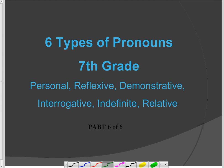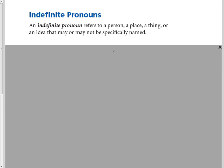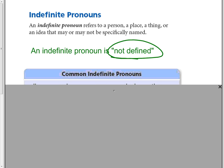This is six types of pronouns for 7th grade. This is the last type — indefinite pronoun, which is part 6 of 6. An indefinite pronoun refers to a person, a place, a thing, or an idea that may or may not be specifically named. I like to say an indefinite pronoun is not defined. There's no clear definition of what it is.